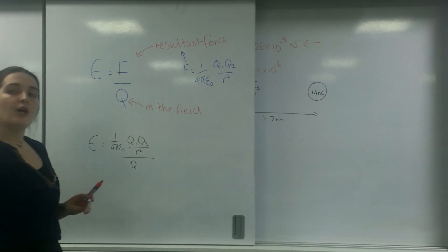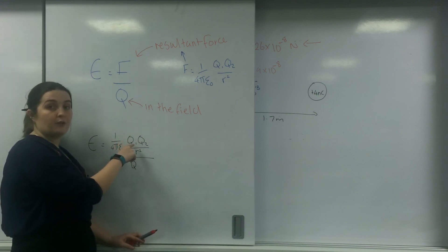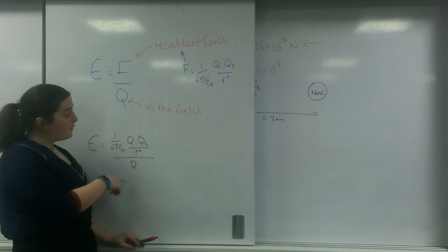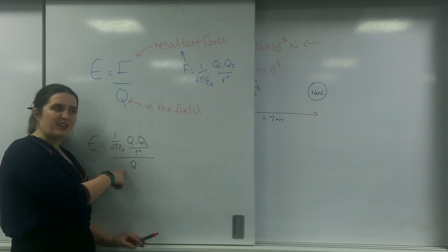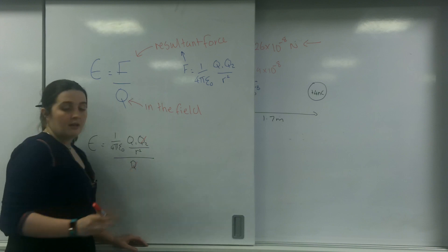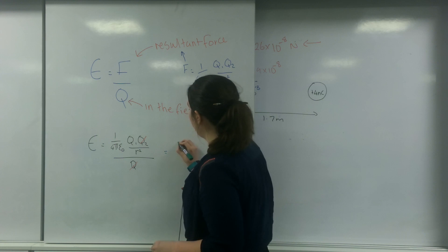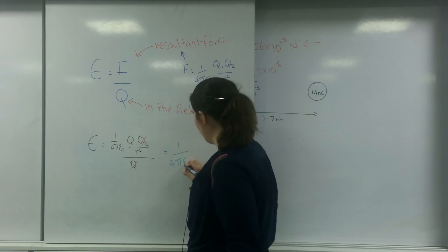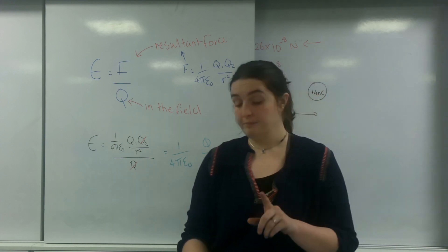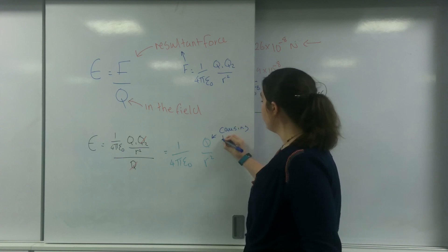In Coulomb's law, one of these charges is the thing causing the field and the other charge is the thing that's in the field. Because this is also the charge of the thing that's in the field, one of these charges cancels, giving us 1 over 4 pi epsilon 0, Q over R squared. This Q here is the thing causing the field.